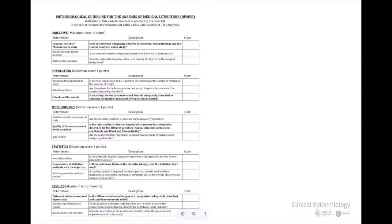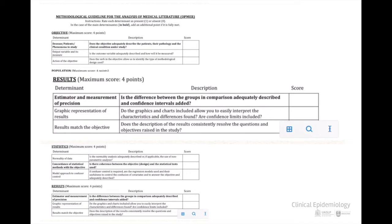Now, it is time to finish the evaluation with the OPMR guide and have a total measurement of the quality of the clinical research article and what does this mean. Are you ready? So, is the difference between the groups in comparison adequately described and confidence intervals added? State your score. Do the graphics and charts included allow us to easily interpret the characteristics and differences found? Are confidence limits included? State your score. Does the description of the results consistently resolve the question and objective raised in this study? State your score.